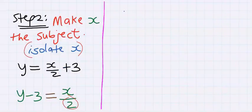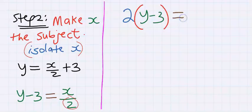Two y minus three is equal to x. X is now isolated.